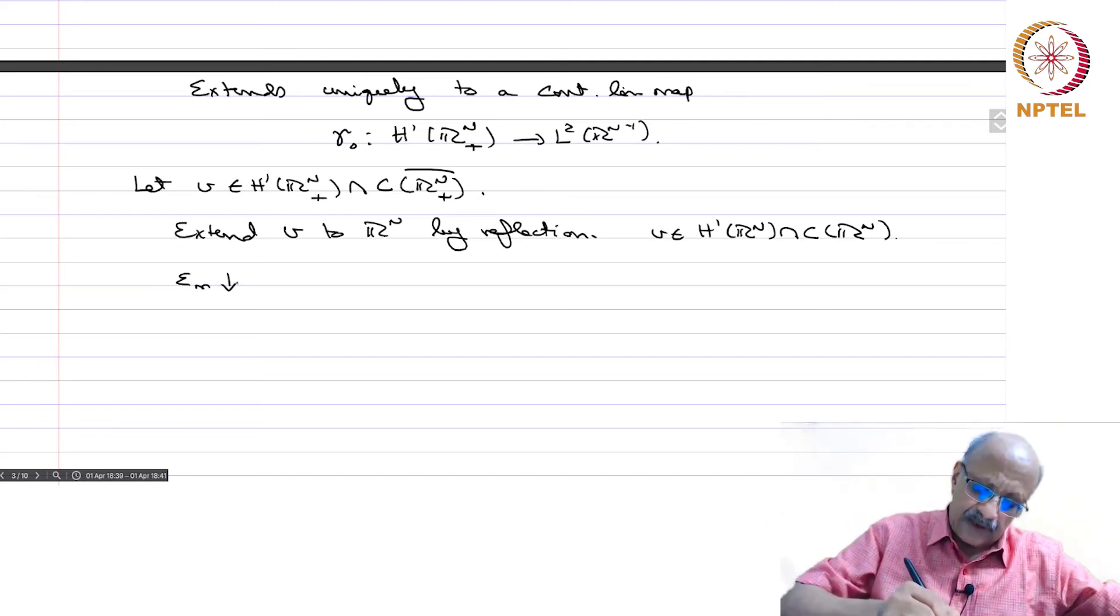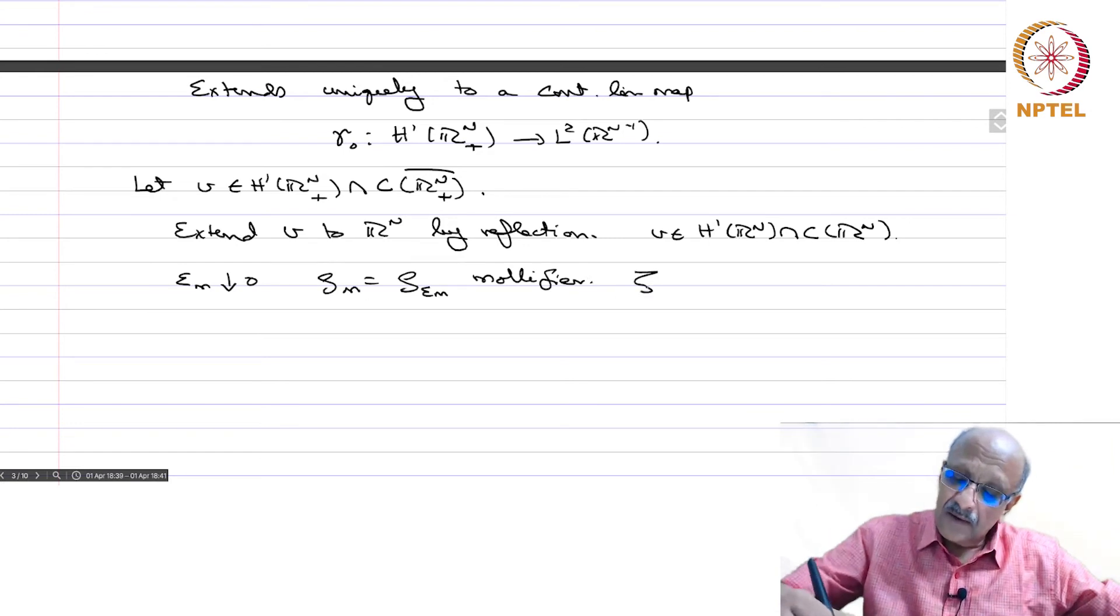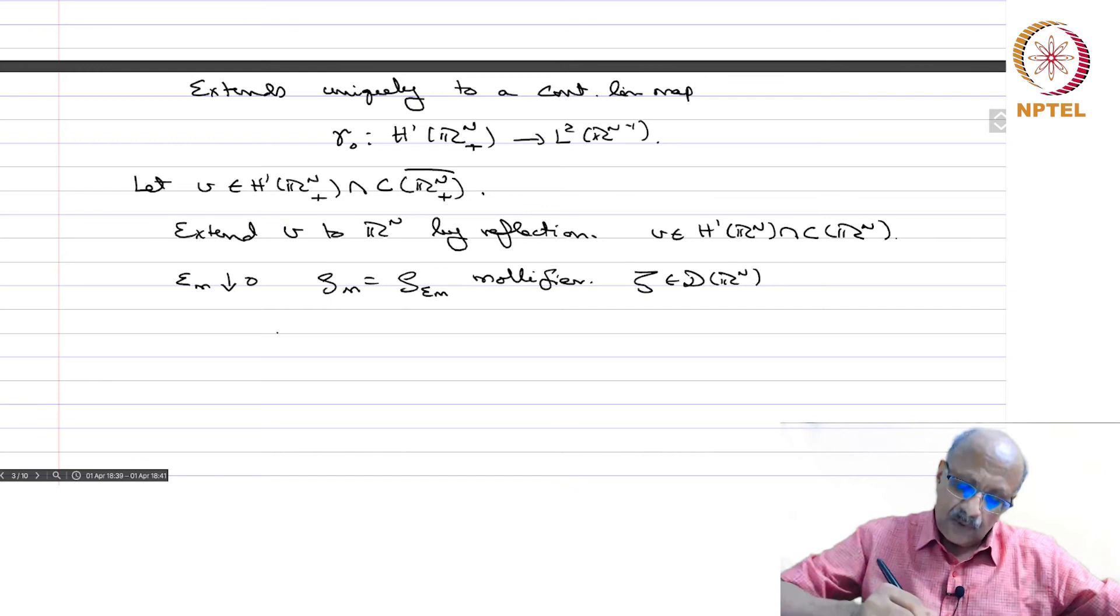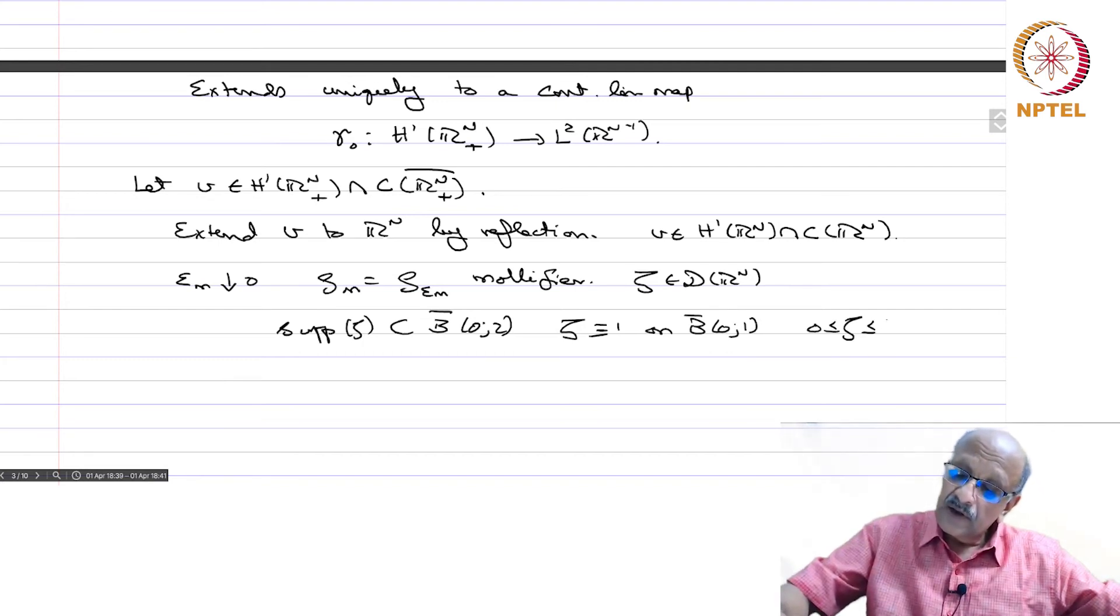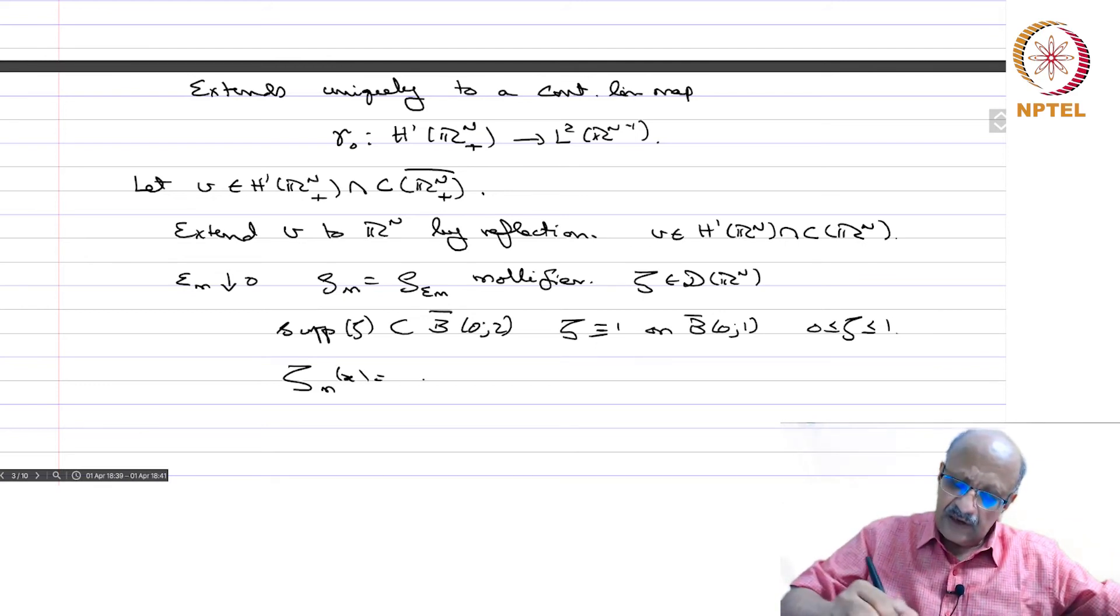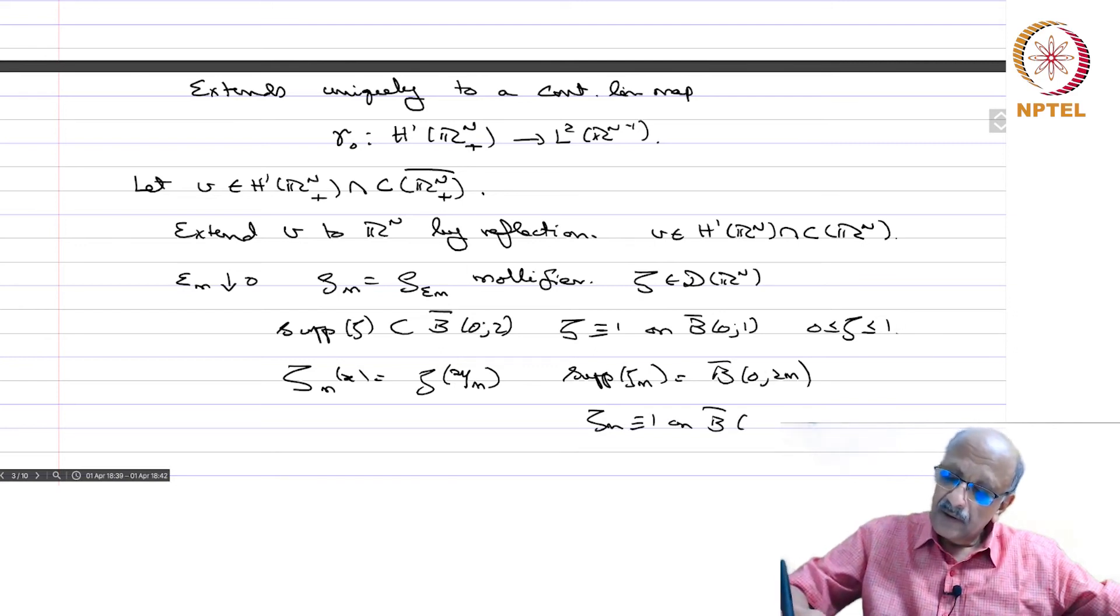Now we have to show, so now let V belong to H1 of Rn plus intersection continuous in Rn plus closure. We want to show that gamma 0 of V is nothing but the restriction. So now extend V to Rn by reflection. Then V belongs to H1 of Rn, this we know because the reflection is a prolongation operator, and it is also, because it is continuous on Rn plus and you are just reflecting it, also in C of Rn. So we have all these things. Now you choose epsilon m decreasing to 0, rho m equals rho of epsilon m mollifier, and then zeta in D of Rn, support of zeta in B02, and zeta identically 1 on B01, 0 less than or equal to zeta less than or equal to 1. And we put zeta m of x is zeta of x by m, and therefore support of zeta m equals B02 m and zeta m is identically 1 on B0 m.